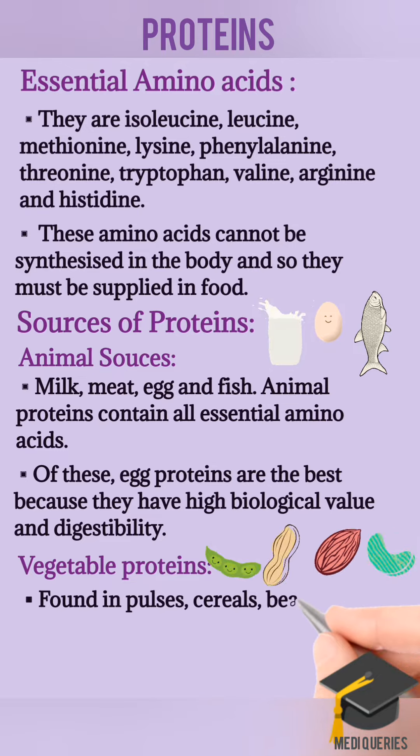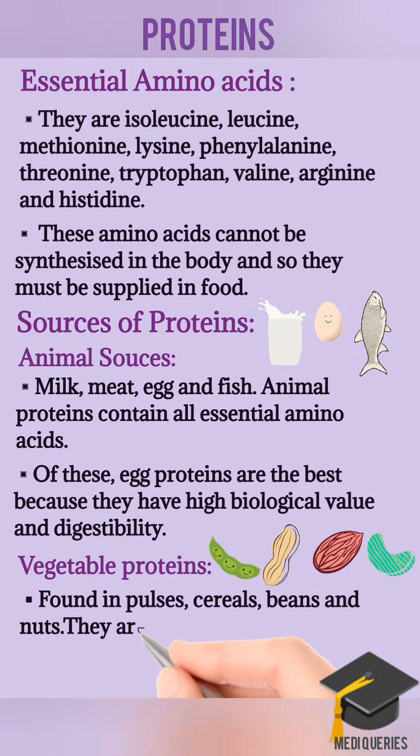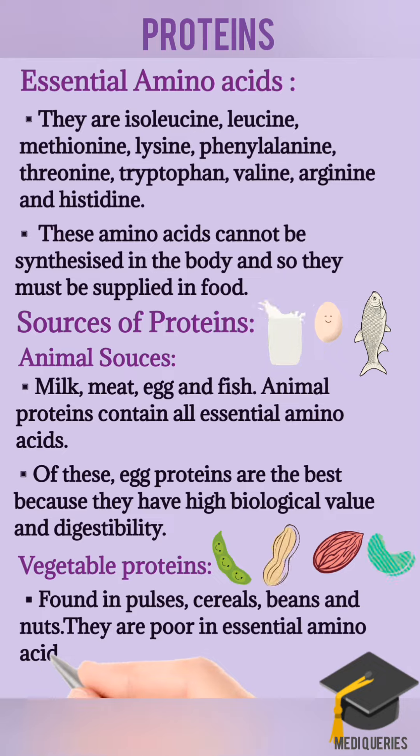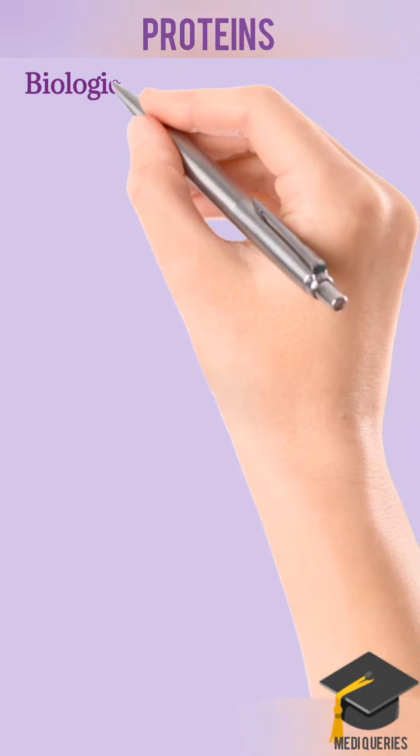Vegetable Proteins are found in pulses, cereals, beans and nuts. They are poor in essential amino acids.